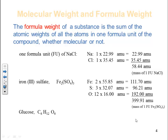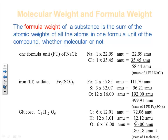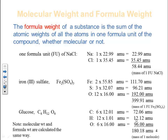Glucose is a molecular compound — we do it the exact same way. 6 × 12.01 for carbon, 12 × 1.01 for hydrogen, and 6 × 16.00 for oxygen, giving a total of 180.18 amu. That's the mass of one molecule of glucose. Molecular weight and formula weight are calculated exactly the same way — this applies to molecules or formula units.